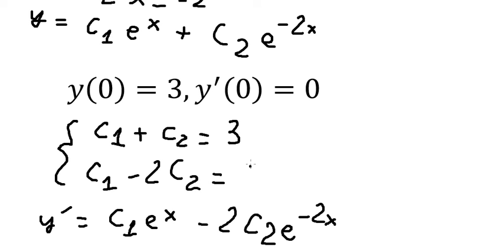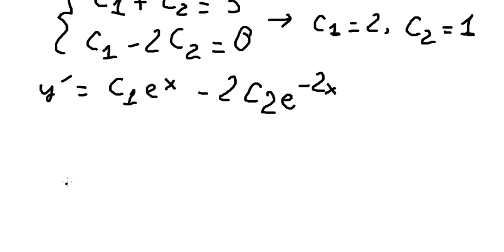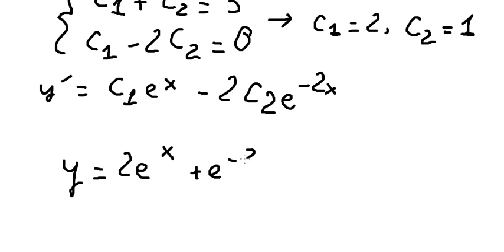We now solve the system of equations and find c₁ equals 2 and c₂ equals 1. Going back to our general solution, the final answer is y equals 2e^x plus e^(−2x). This is the end — thank you for watching.